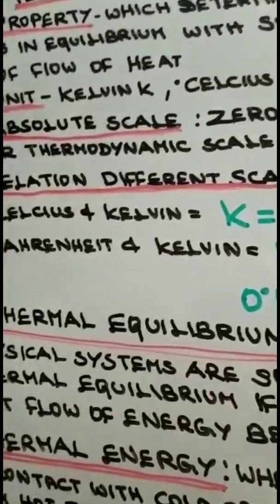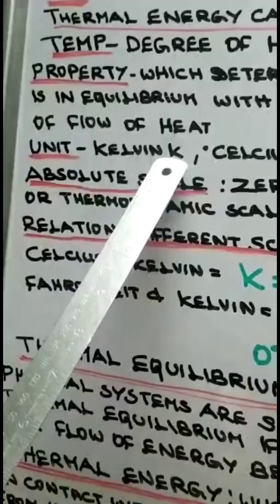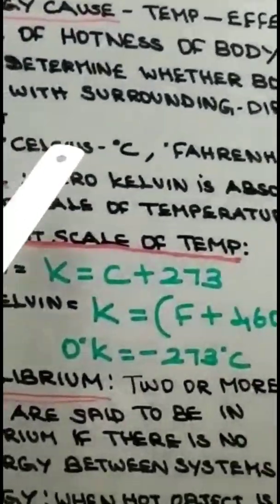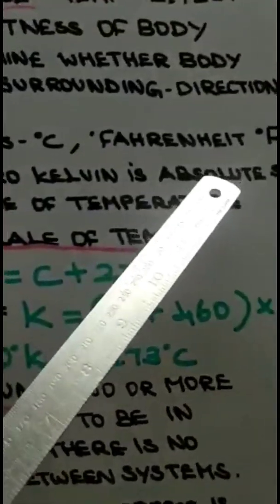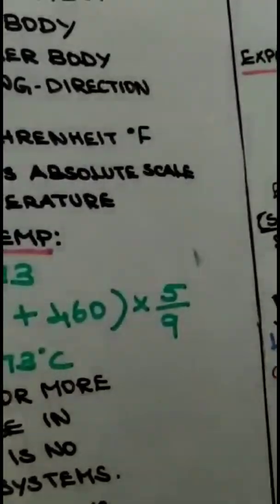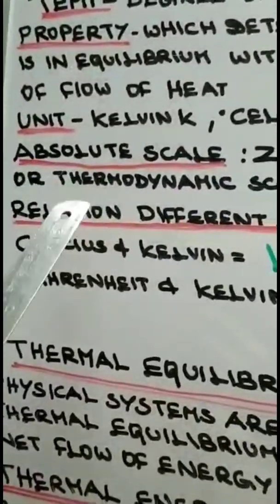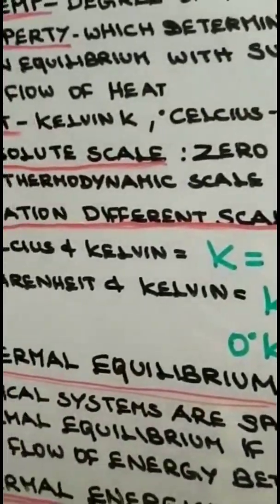There are various units which are used to measure the temperature. The units are Kelvin, Celsius degree Celsius which is represented as degree C, and degree Fahrenheit which is represented as degree F. Now we are going to see what is absolute scale. Absolute scale is zero Kelvin, also known as thermodynamic scale of temperature.